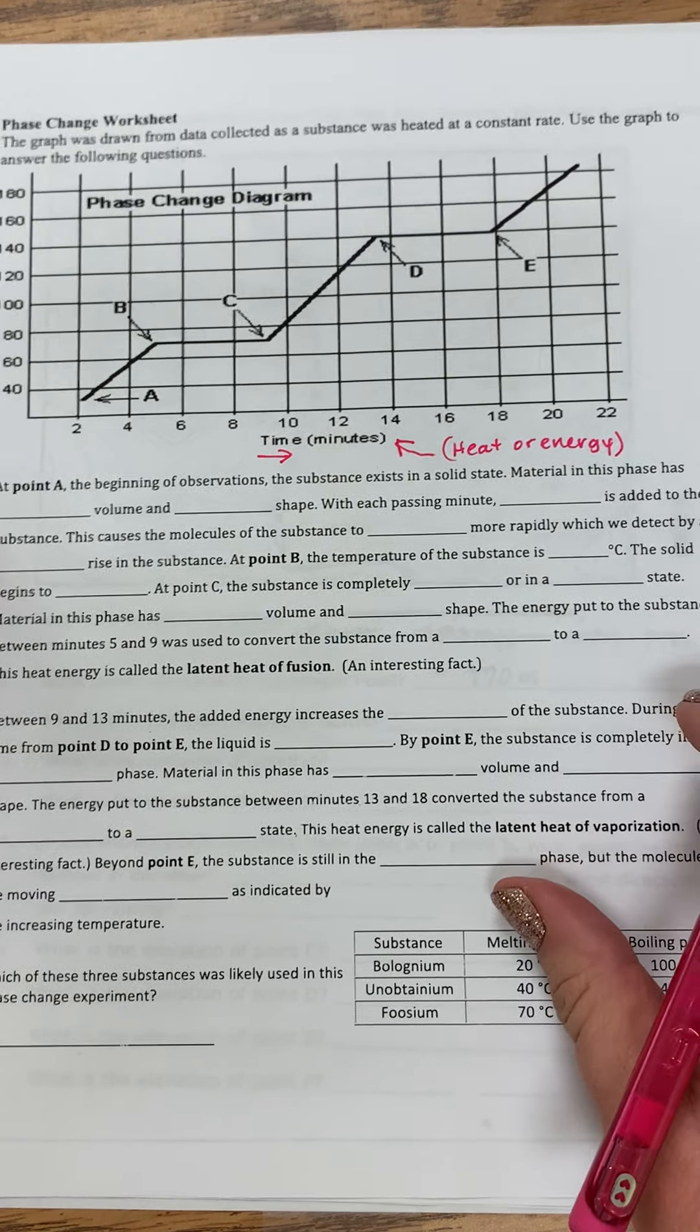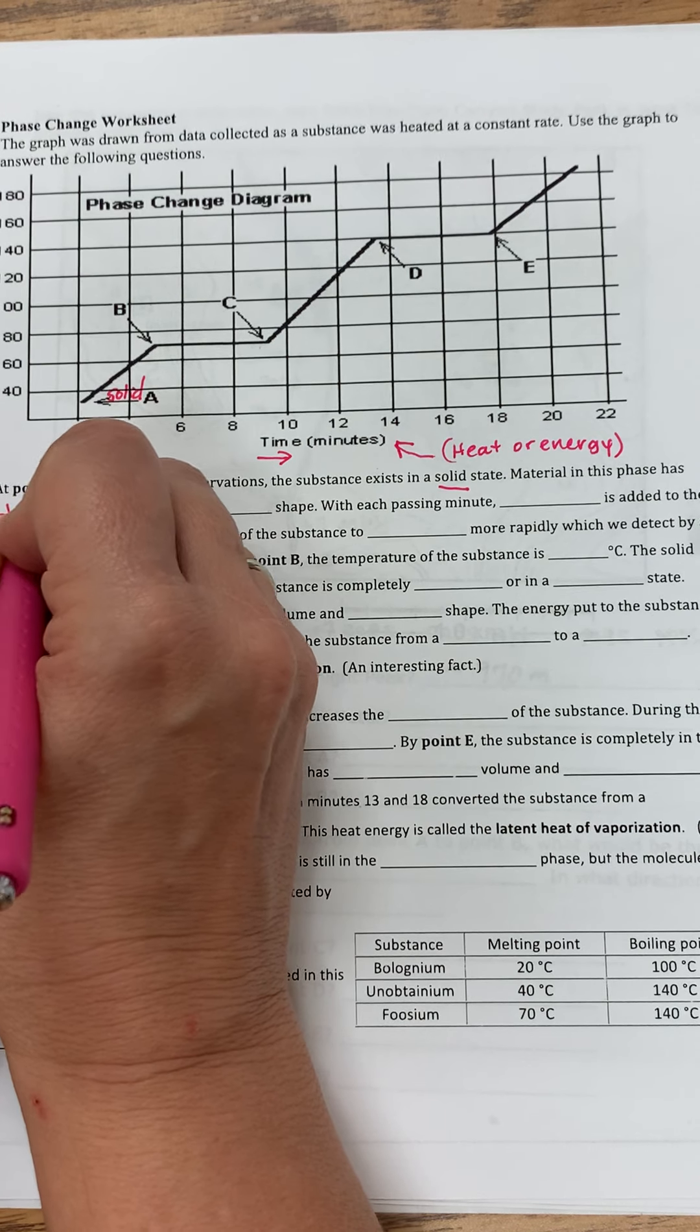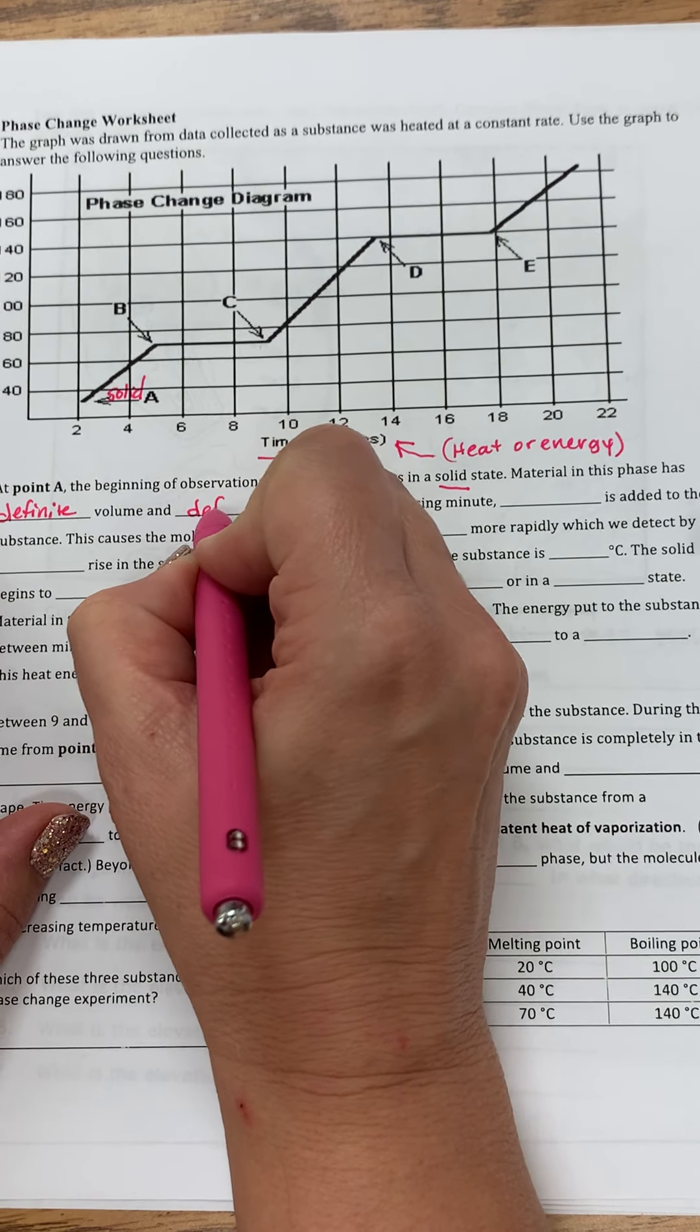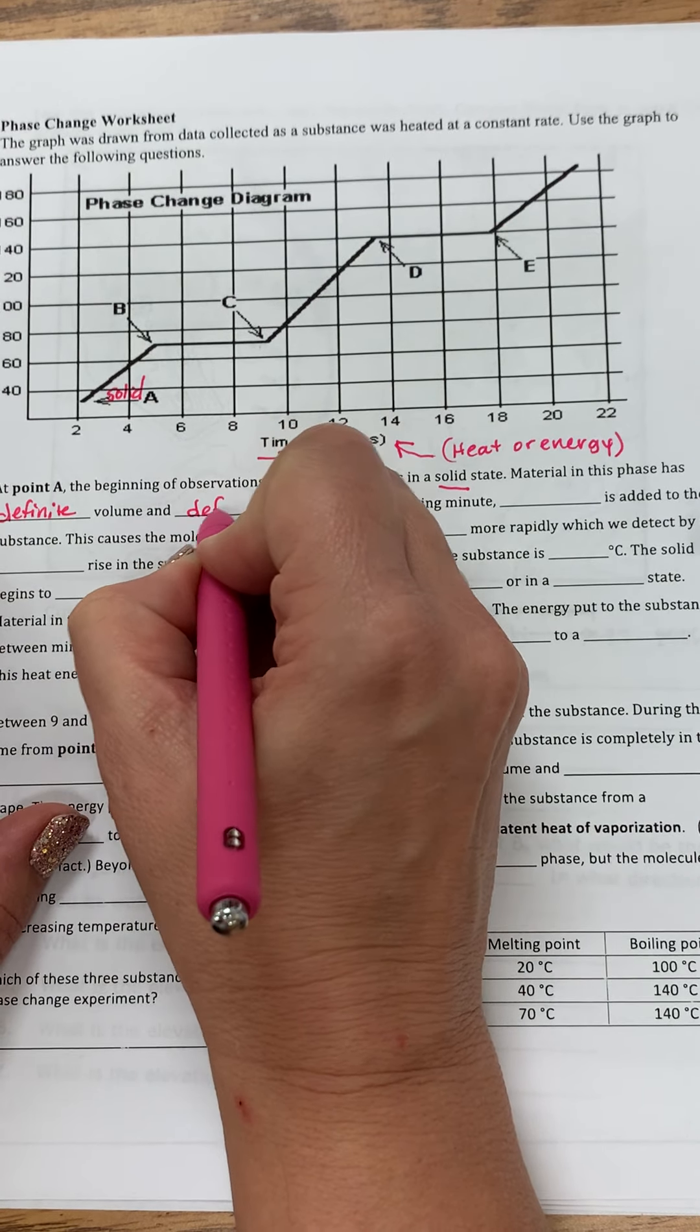So let's go through this just to give you some ideas of what's going on in this graph. So at point A, the beginning of the observations, the substance exists as a solid. So right here, we have solid.